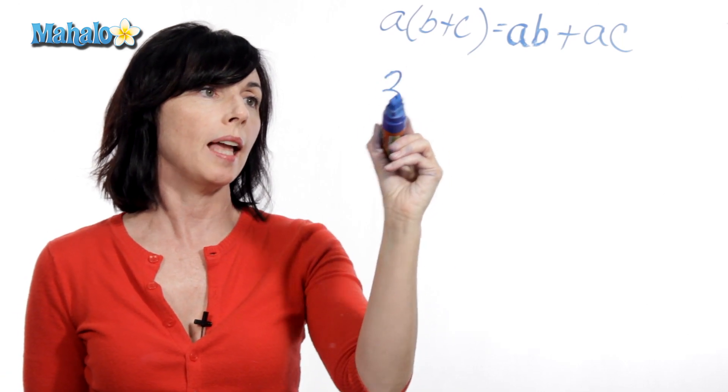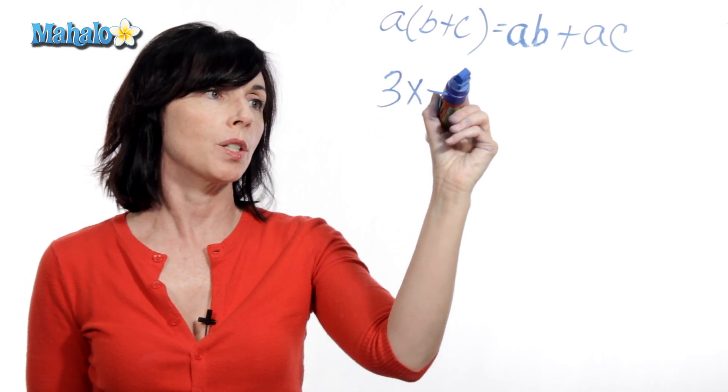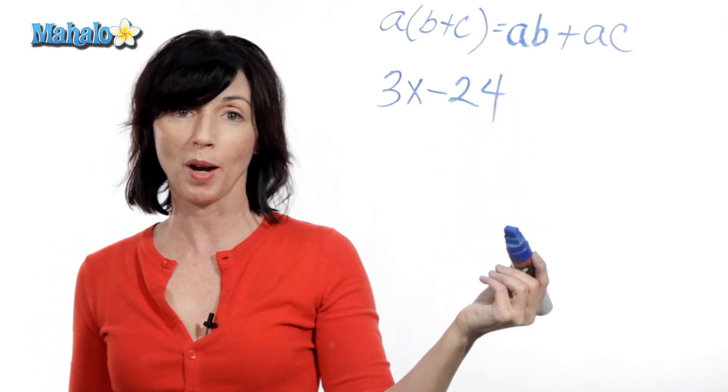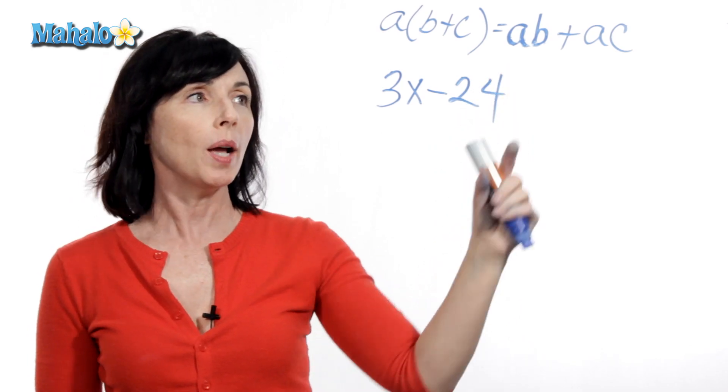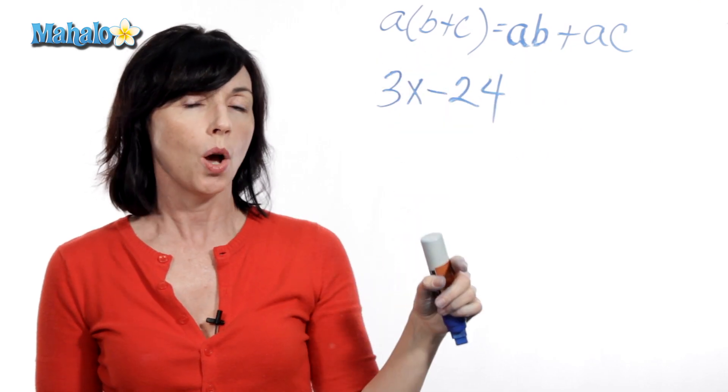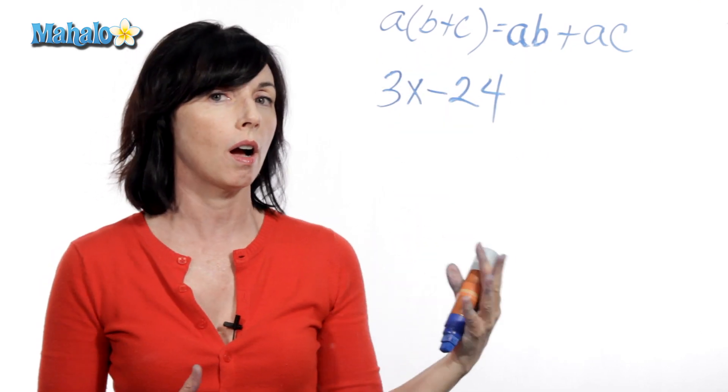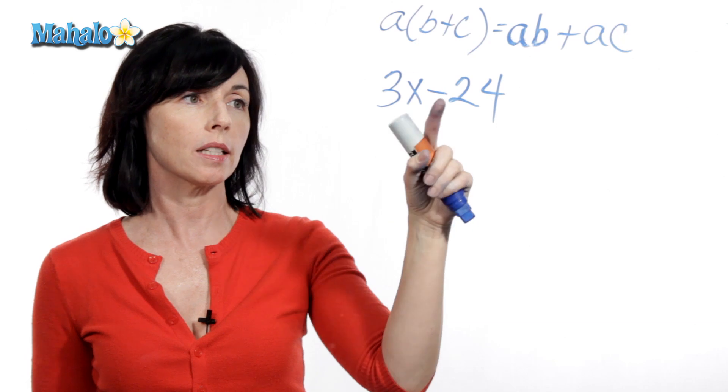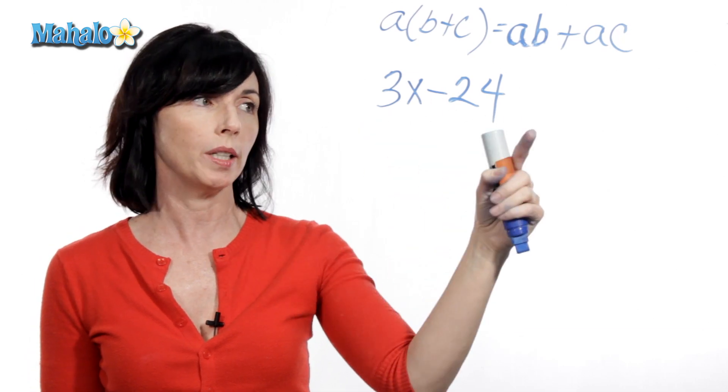Let's say we have 3x minus 24. So we're doing an algebraic example today. Now, if I want to use the distributive property to make this look more like this, the first thing I have to do is look for a common factor, something that's common to both 3x and 24.